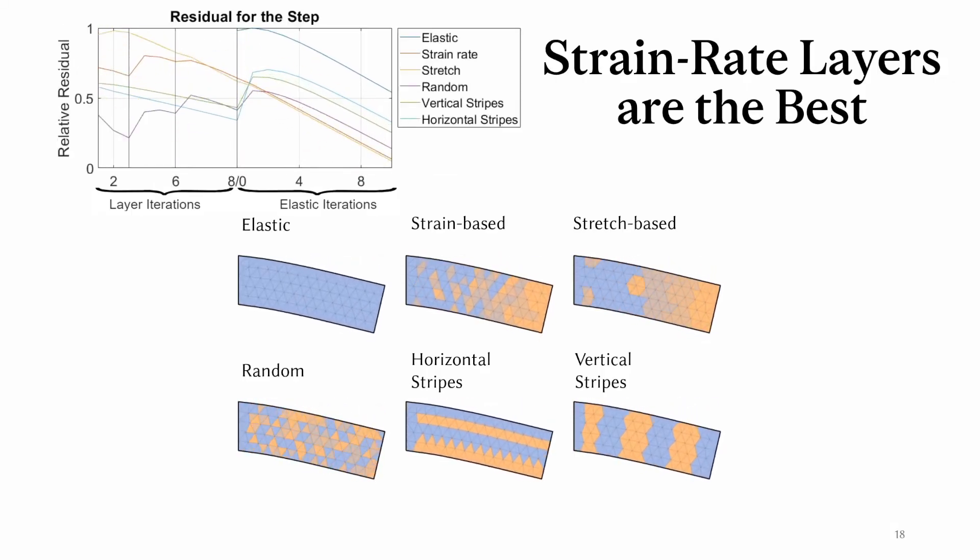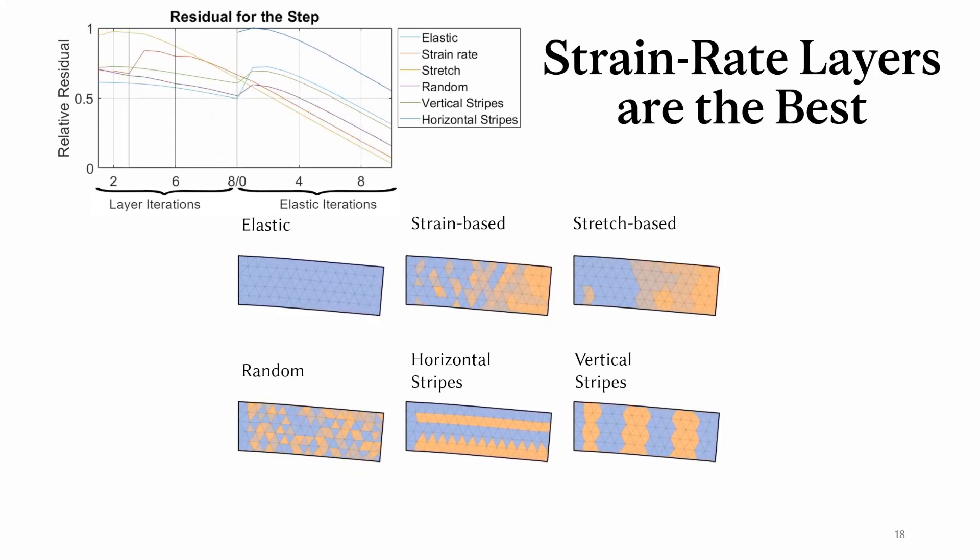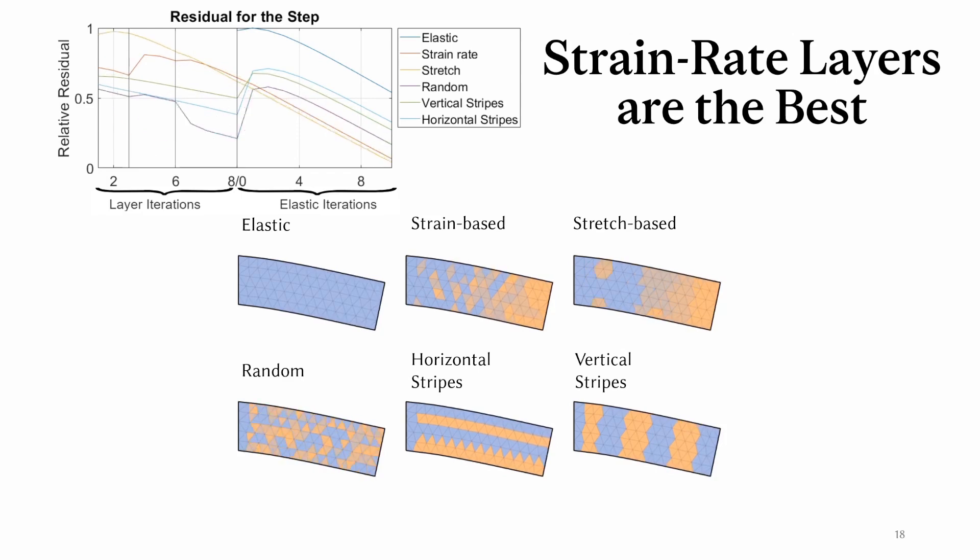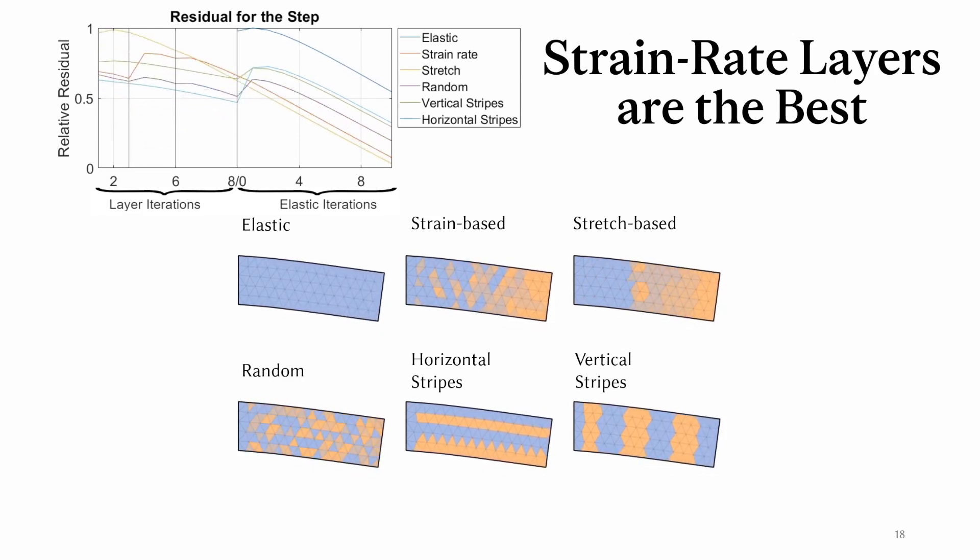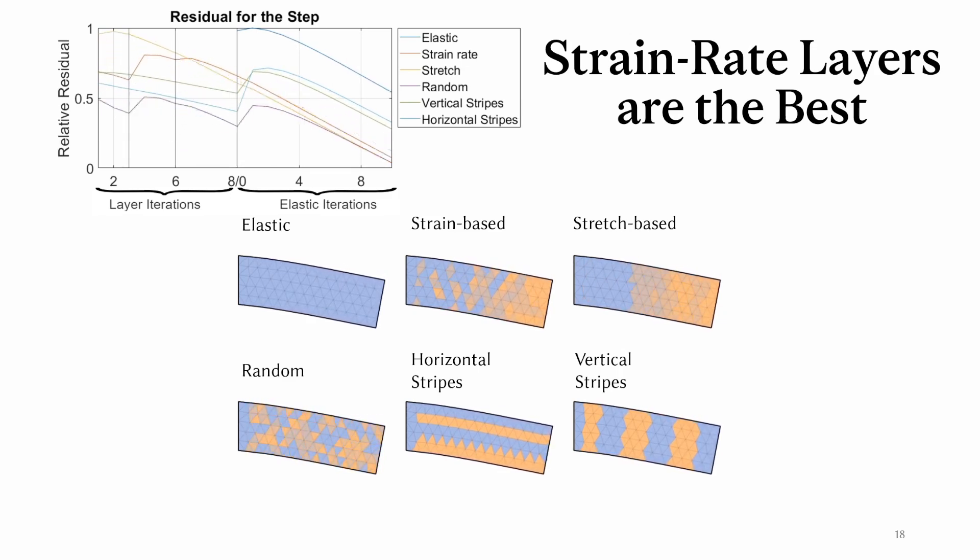We monitored the convergence over iterations for multiple types of rigidification patterns. Some patterns are automatically built, like random, strain-based, and stretch-based. But we also set up some layers that require a bit of domain knowledge, like horizontal and vertical stripes.